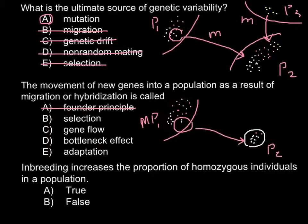Answer B, selection, does not answer our question either, because when migration happens there is usually no special selection — it is a random process. Animals or pollen may migrate to the island purely randomly, and allele frequency might differ from what we have in population one.